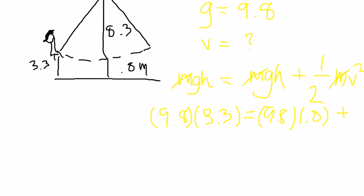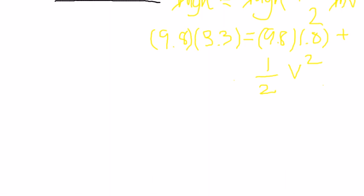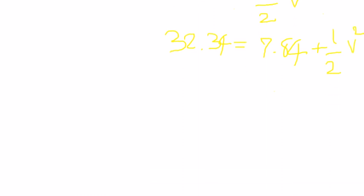Plus 1/2 V squared. So 9.8 times 3.3 is 32.34, and 9.8 times 0.8 is 7.84 plus 1/2 V squared. So that's subtract: 32.34 subtract 7.84 is 24.5, and that's the rest.